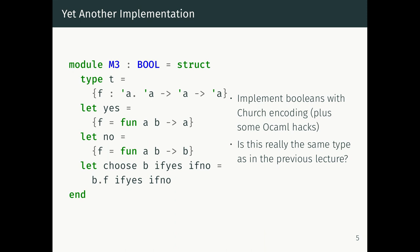The Church encoding of booleans is typed in OCaml as a function which for any type 'a takes a 'a to a 'a to a 'a. The yes value is a function that takes two arguments a and b and returns a; the no value takes two arguments a and b and returns b. When we call choose, we call the polymorphic function with the if_yes and if_no arguments, and based on which function it received it returns either the first or the second argument.